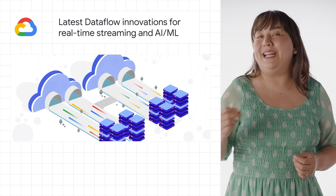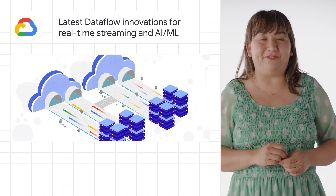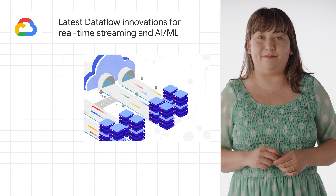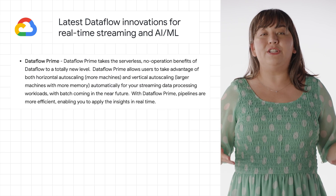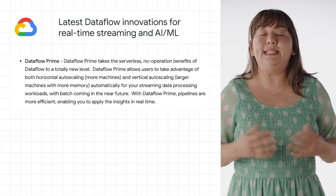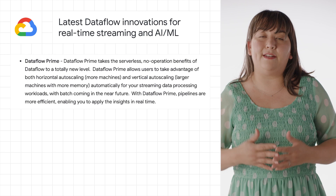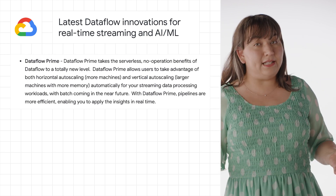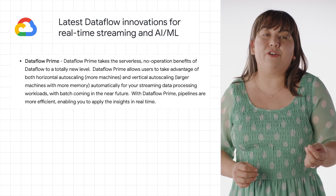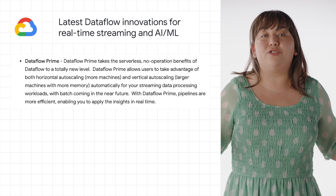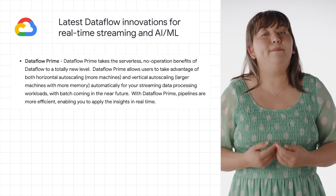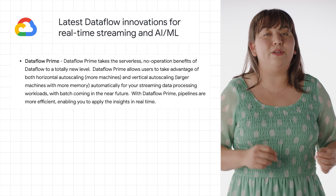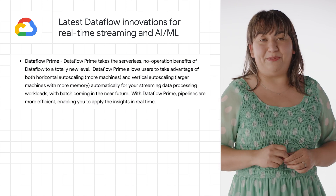We released three big Dataflow products to general availability for real-time streaming and machine learning. First is Dataflow Prime, which allows users to take advantage of both horizontal auto-scaling — more machines — and vertical auto-scaling — larger machines with more memory — automatically for your streaming data processing workloads, with batch coming in the near future.